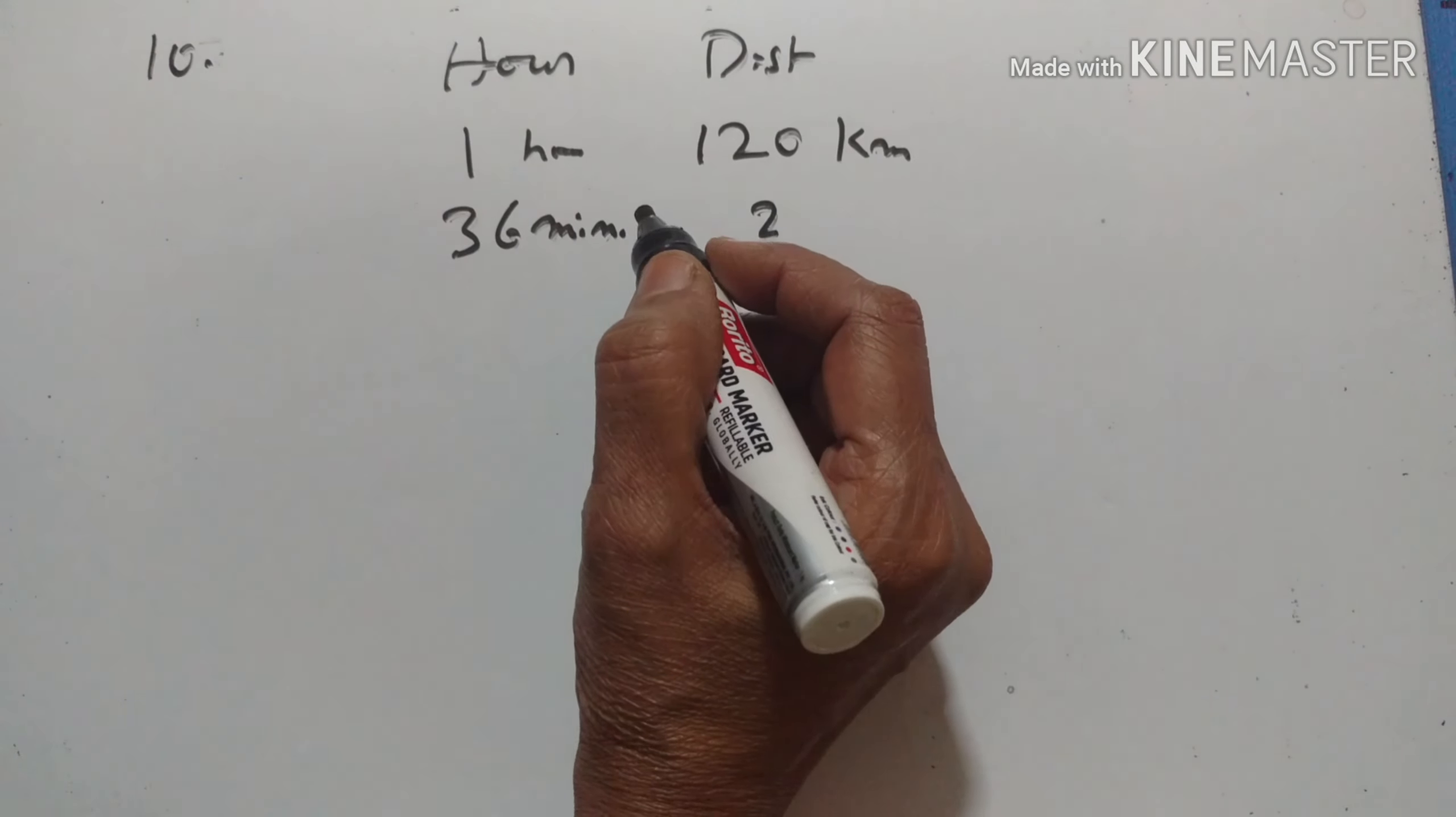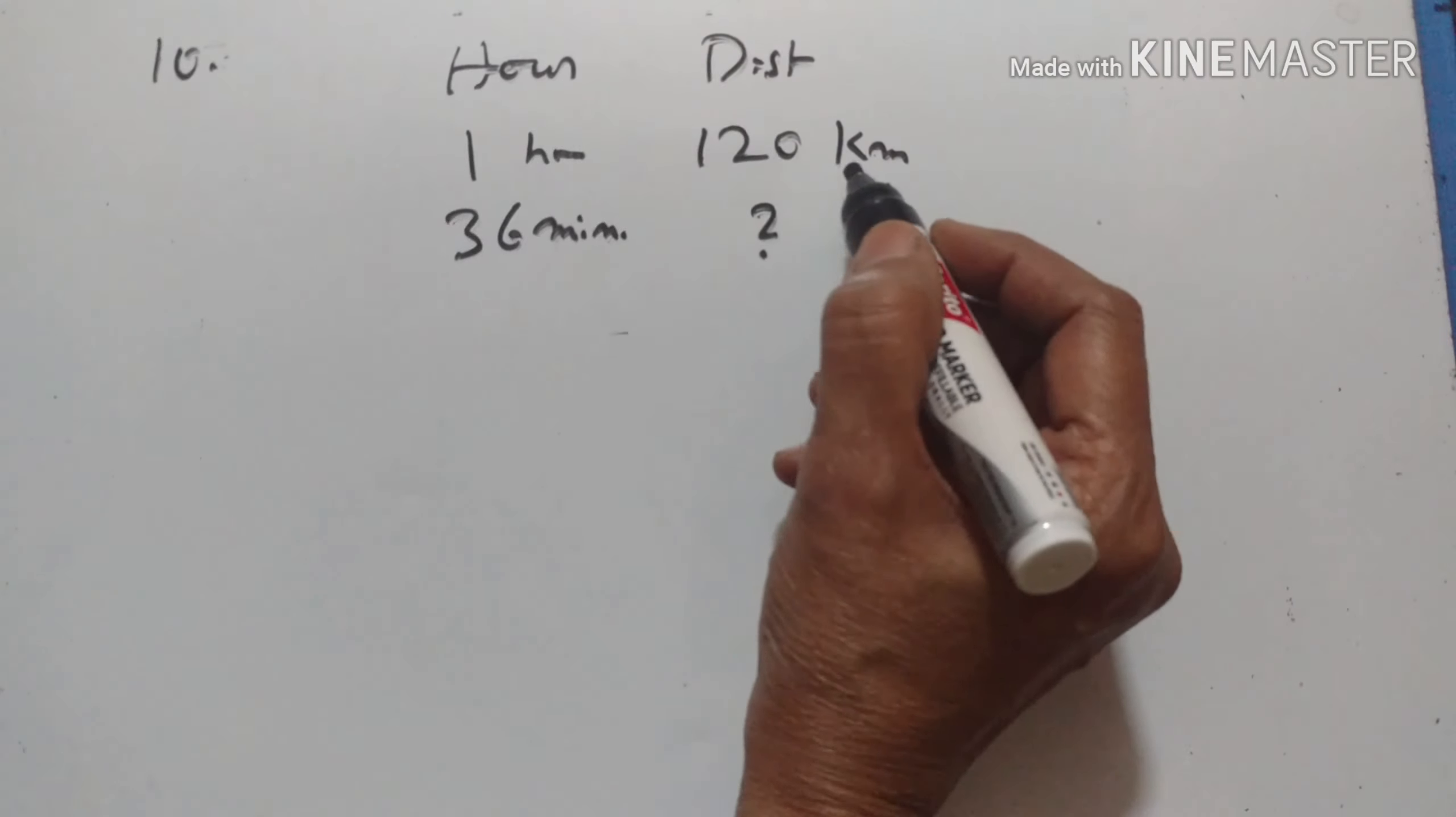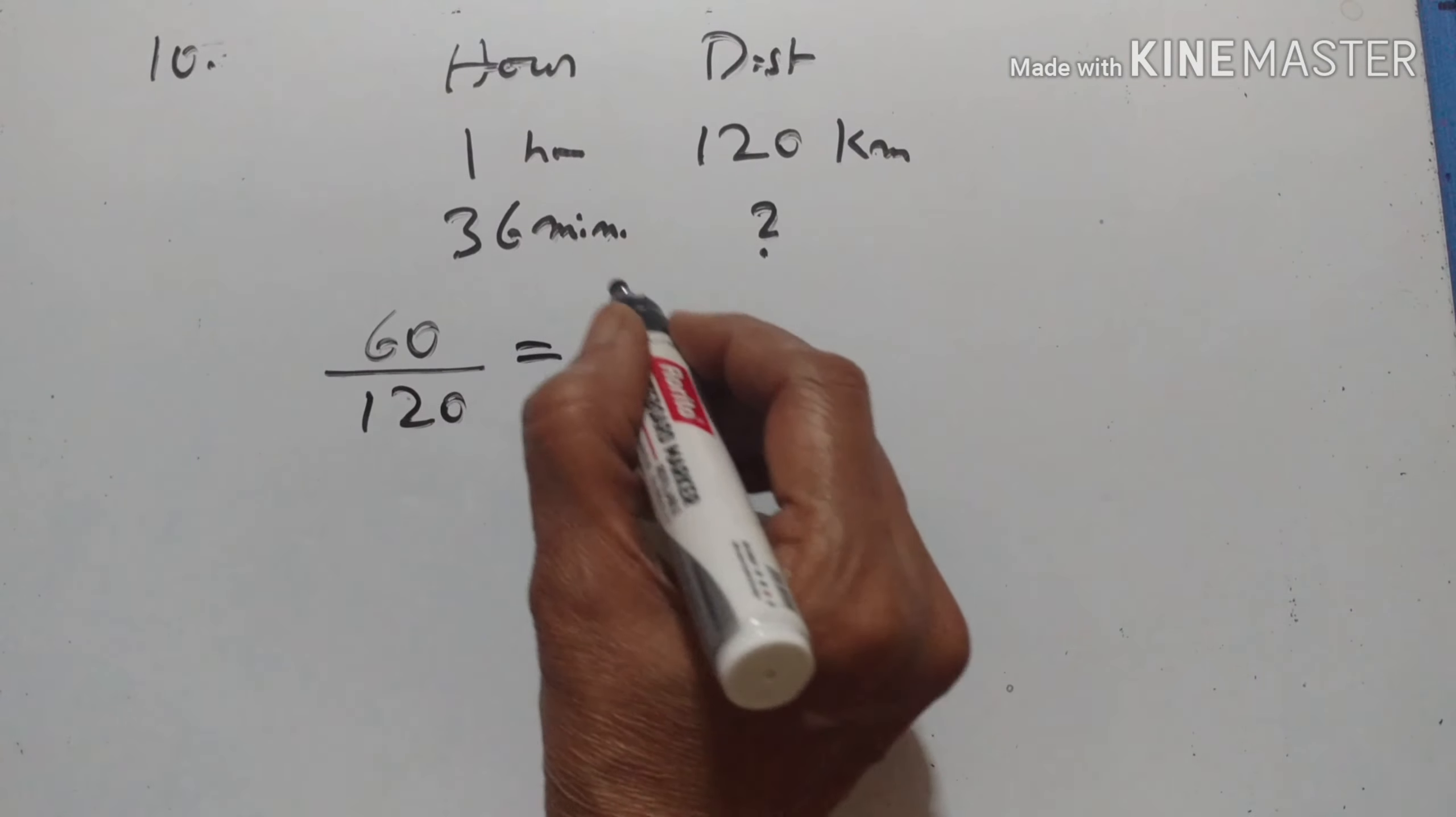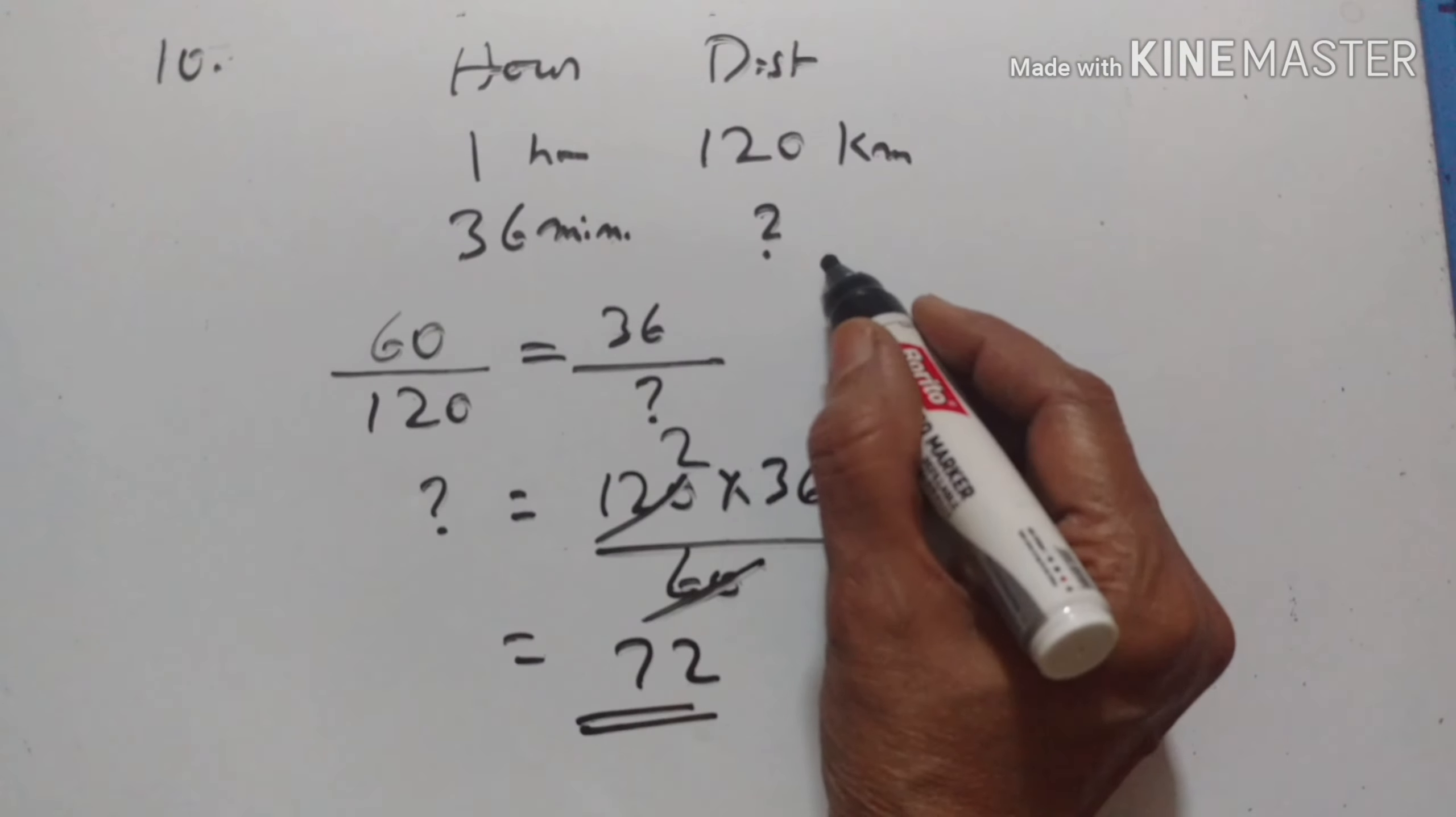10th problem. A train is moving with uniform speed of 120 km per hour. In one hour, 120 km. How far will it travel in 36 minutes? In 60 minutes, it covers 120 km. So in 36 minutes, what is the distance covered? So X1 upon Y1, 60 minutes upon 120 is equal to 36 upon, 120 into 36 upon 60. 60 is the 62 is the 72. So 72 km. In 36 minutes, it will cover a distance of 72 km.